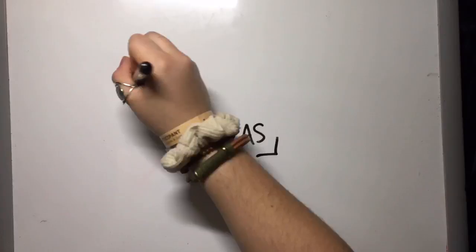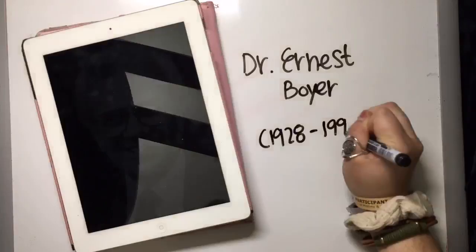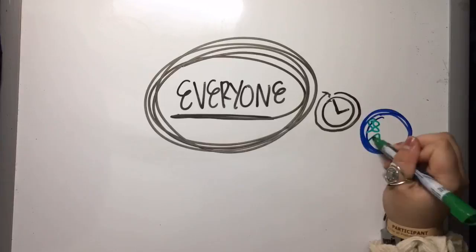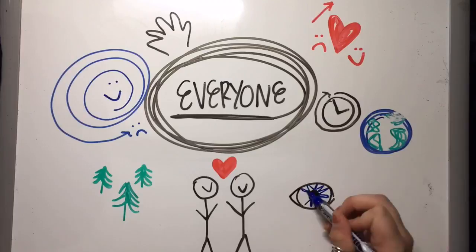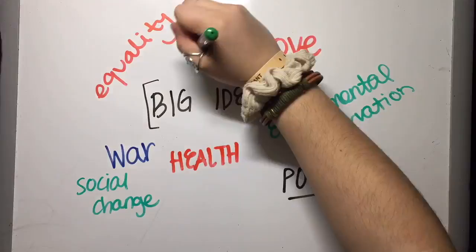How can we explore big ideas in new and innovative ways? Dr. Ernest Boyer identifies eight common themes that everyone experiences: time and place, symbols, life cycles, interactions with nature, connections, aesthetics, and a search for larger purpose. Through these eight common themes we form what we call big ideas.